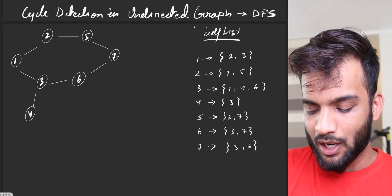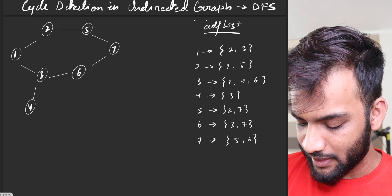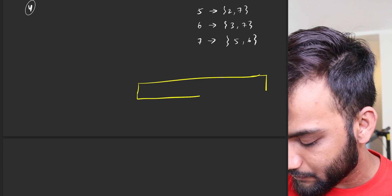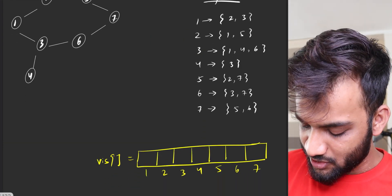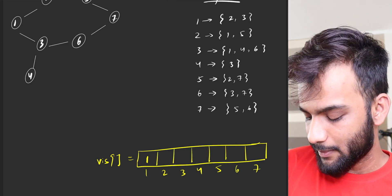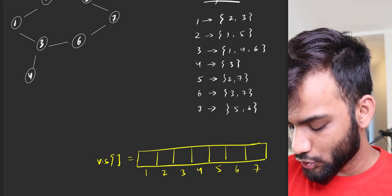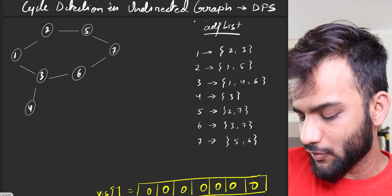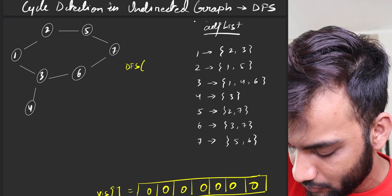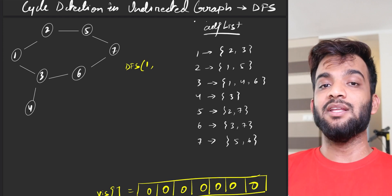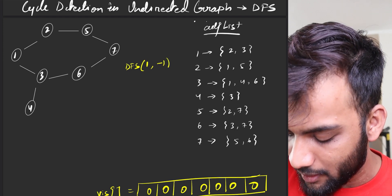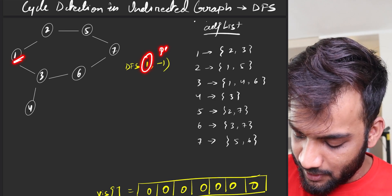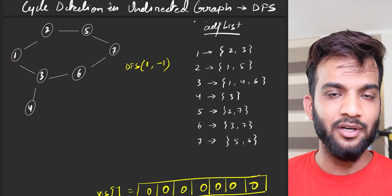We take a source node, but before that make sure you have a visited array with everything marked as 0. In the DFS we can mark nodes as visited. For the first call — DFS of node 1 — make sure you carry the parent. It came from minus 1. I'll tell you why you need to carry the parent. So this is basically the node and this is the parent.